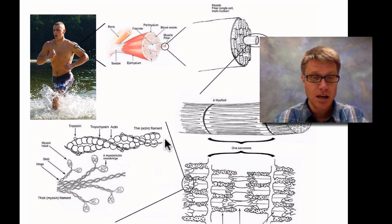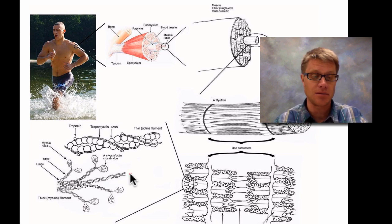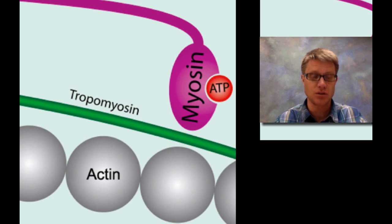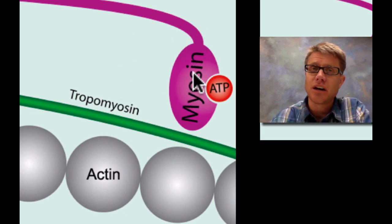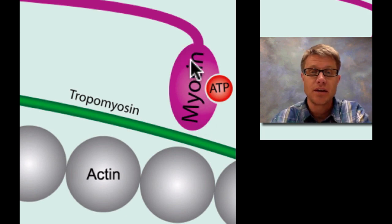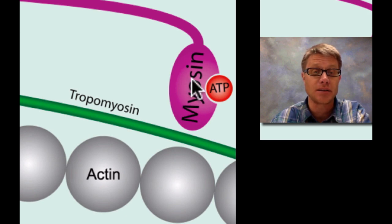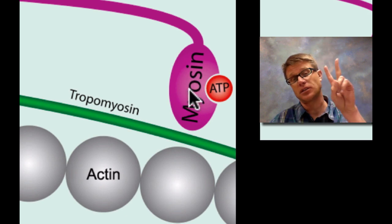So actin is going to look like this. And then myosin is going to have all these heads. They have these double heads and they're trying to grab on to the actin. So before I get to the whole idea of how a muscle is able to contract, I want to talk about the story of actin and myosin. Myosin has these double heads, but basically what it would do is myosin would like nothing more than to grab on to actin. And to do that it needs essentially two things. It needs ATP, and that's going to provide the energy. But it also needs to have access.